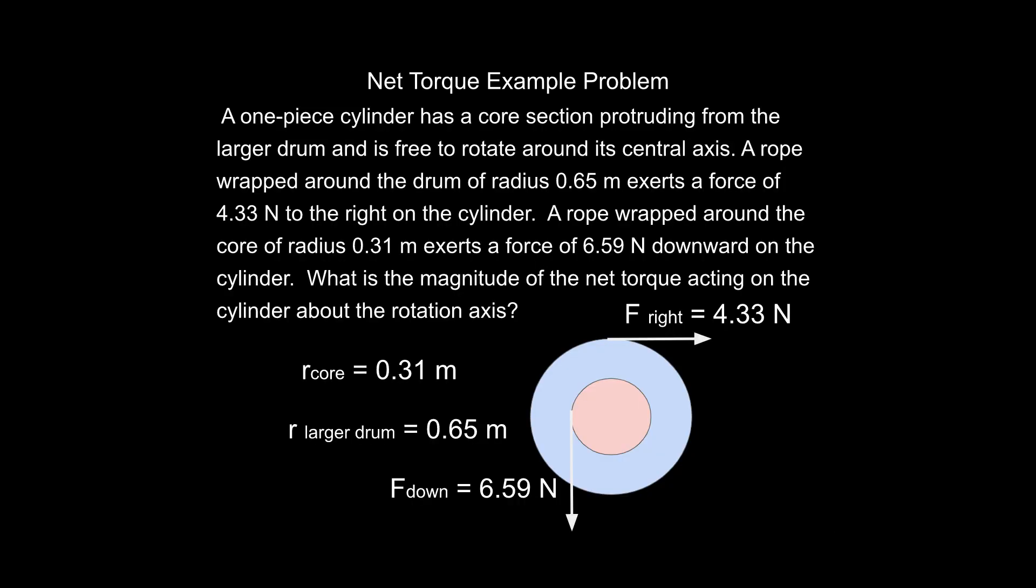If you take a look here, you've got a cylinder that has actually two different radii involved, like one cylinder that is closer to us from this point of view, and another cylinder that's in the background. And there are two forces involved. There's a force to the right on the outermost cylinder, and there's a force going downwards.